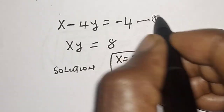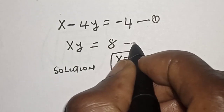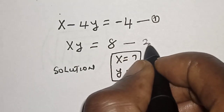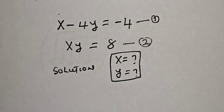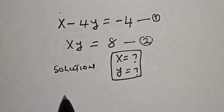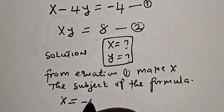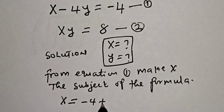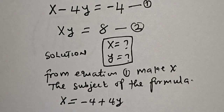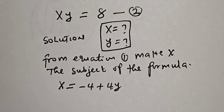Solution: we have x minus 4y is equal to minus 4 — let's call this equation 1. And xy = 8 — let's call this equation 2. From equation 1, let's make x the subject of the formula. Then x is equal to minus 4 plus 4y.